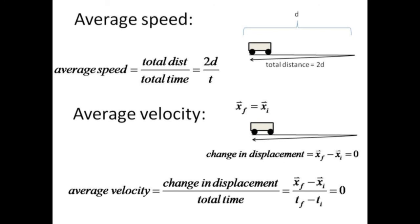A NASCAR driver may have an average speed of 230 miles per hour, but his average velocity will be zero.